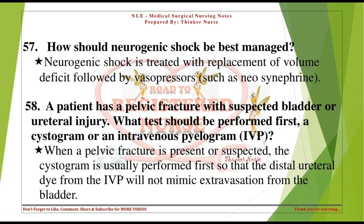How should neurogenic shock be best managed? Neurogenic shock is treated with replacement of volume deficit followed by vasopressors such as neosynephrine. A patient has a pelvic fracture with suspected bladder or ureteral injury — what test should be performed first, a cystogram or IVP? The cystogram is usually performed first so that the distal ureteral dye from the IVP will not mimic extravasation from the bladder.